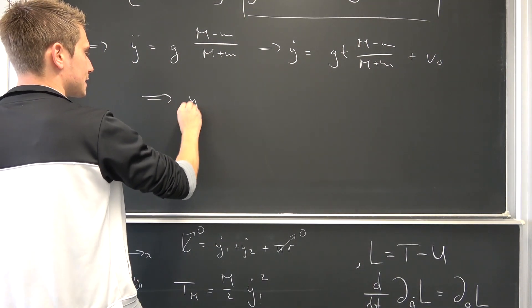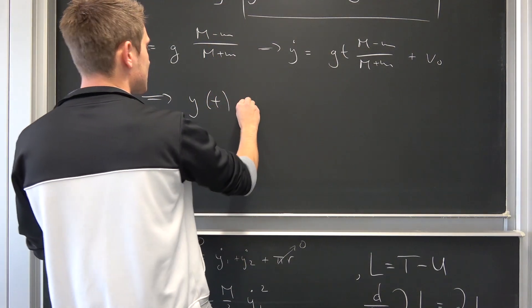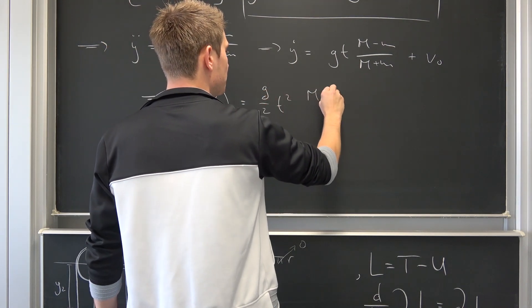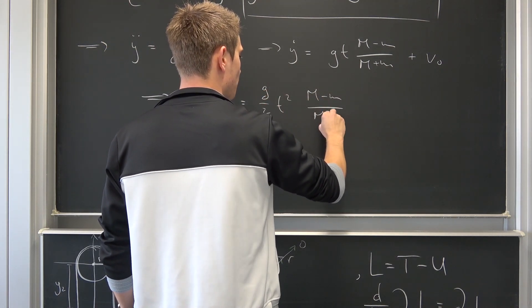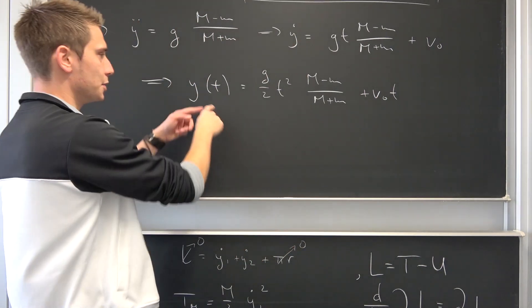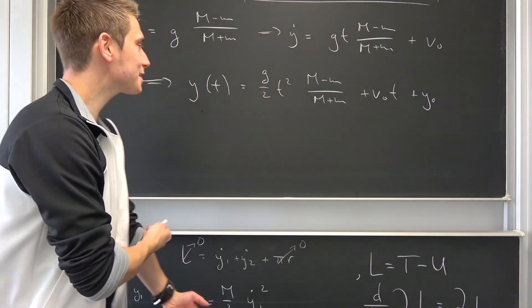And thus, if we were to integrate this yet again, our solution to this differential equation for the Atwood machine is thus Y of t being equal to g over 2, t squared, M minus m over M plus m, plus V naught times t, plus some initial Y value, plus Y naught. And this is it.